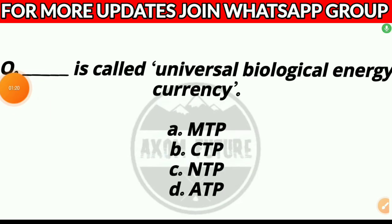Question 5. This is called the universal biological energy currency: Option A, MTP; Option B, CTP; Option C, NTP; or Option D, ATP. Answer: Option D, ATP.